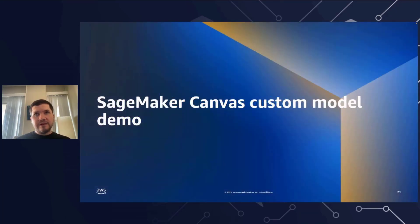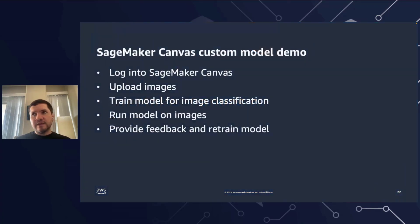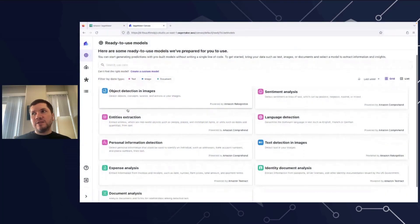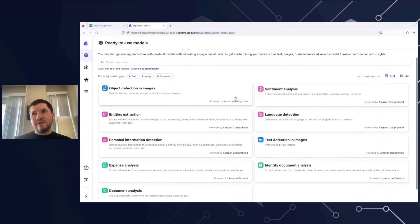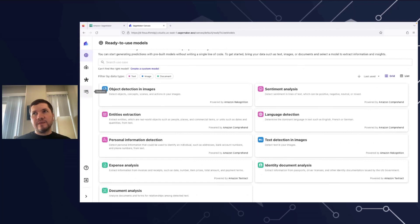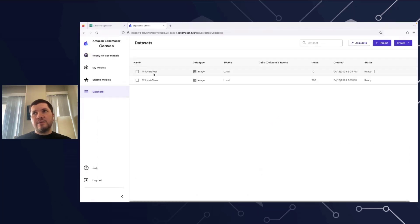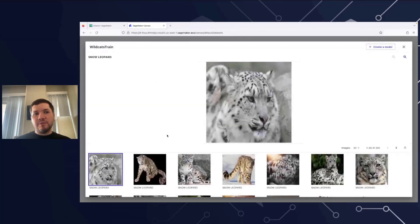Now let's switch to the SageMaker Canvas custom model demo. During this demo, we will get into SageMaker Canvas, see how working with images works, and how to train a model and run predictions. Right away here are models you can use — this is what I mentioned as integrated ML, models which you don't need to train. I prepared two datasets, wildcats train and wildcats test, which have two types of images: Snow Leopard and Cheetah.